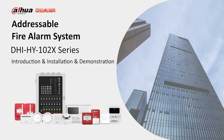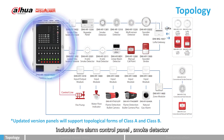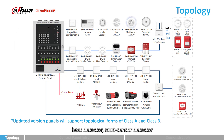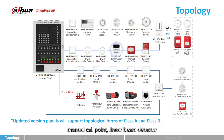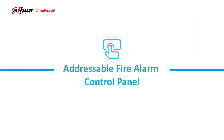Hello everyone. In this video we will explore the Dahwa addressable fire alarm control panel with one loop. The Dahwa fire alarm system includes fire alarm control panel, smoke detector, heat detector, multi-sensor detector, sounder strobe base, Laura series sounder strobe, manual call point, linear beam detector, input/output module, input module, and zone module, to realize the AIoT solution with DSS Pro or Visual Arm cloud platform.